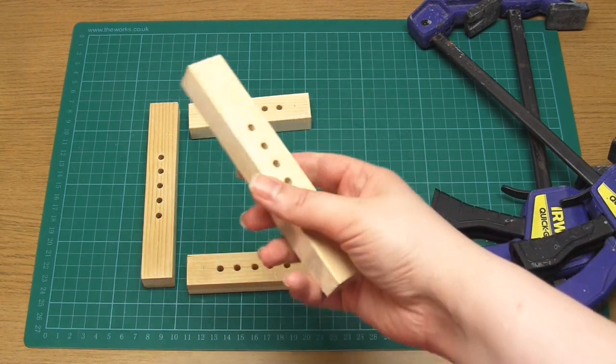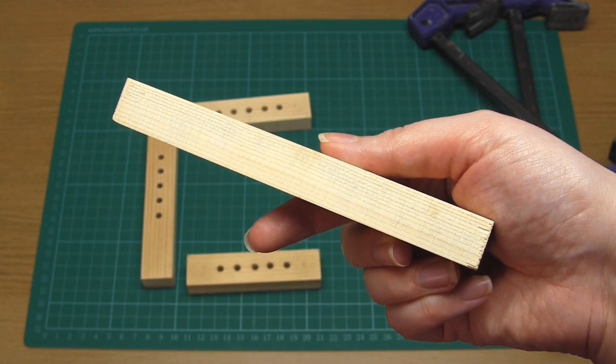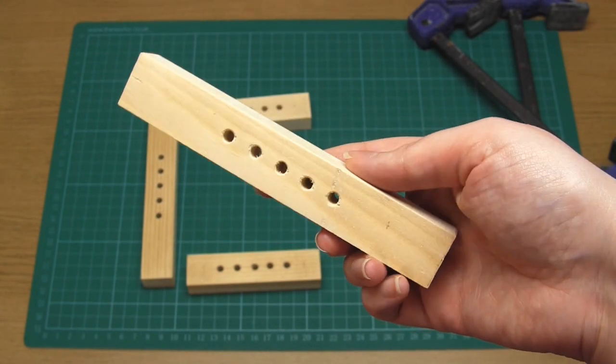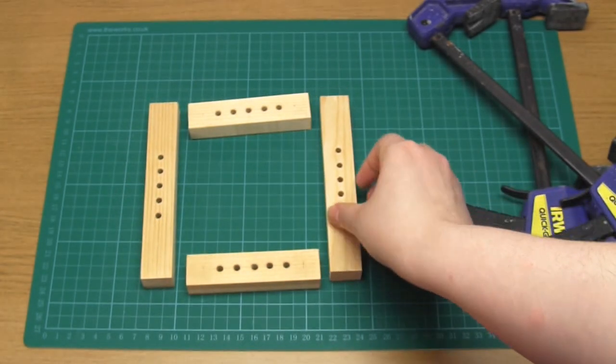In order to make my frame I used wood that's three quarters of an inch thick and I cut out four strips. Two of these strips measured one by six inches and two of these strips measured four by one inch.